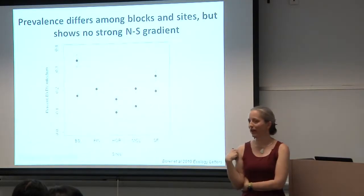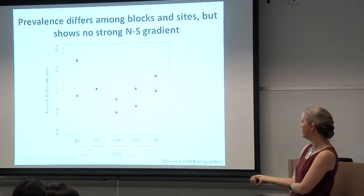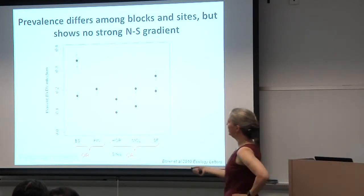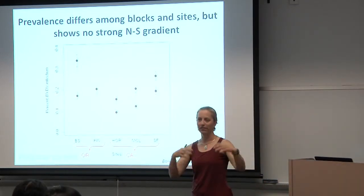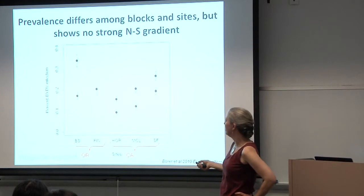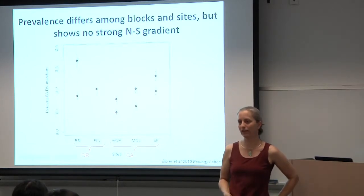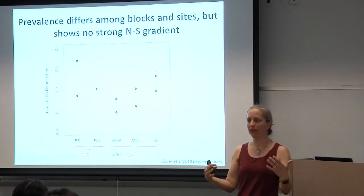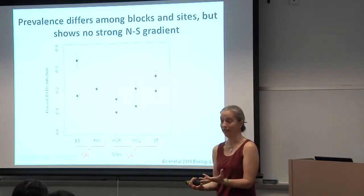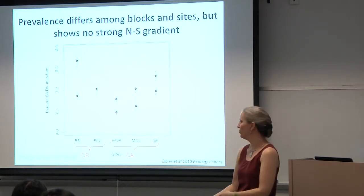So this is what we found. These two are the Oregon sites and the California sites. While we see substantial variation in infection prevalence — so this is at the scale of the population or community — prevalence of infection is highly variable, from about 10% to nearly 40% across these blocks. We don't see a strong north-south gradient, so there isn't something explicitly regional happening in these data.